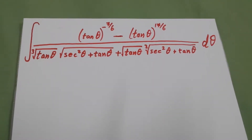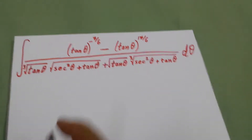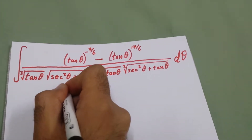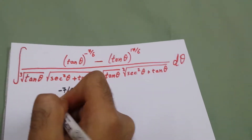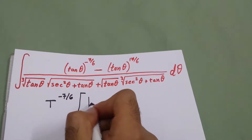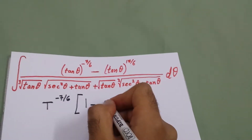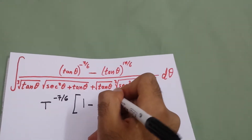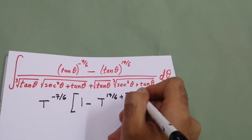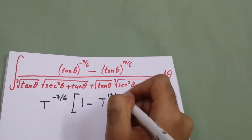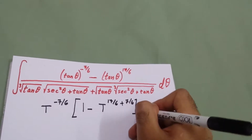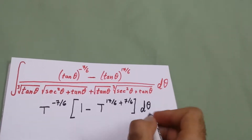We will take T to the power of minus 7 over 6 as a common factor from the numerator, so we will have times 1 minus T to the power 17 over 6 plus 7 over 6, which is 17 plus 7 = 24 over 6, which equals 4, so d theta.